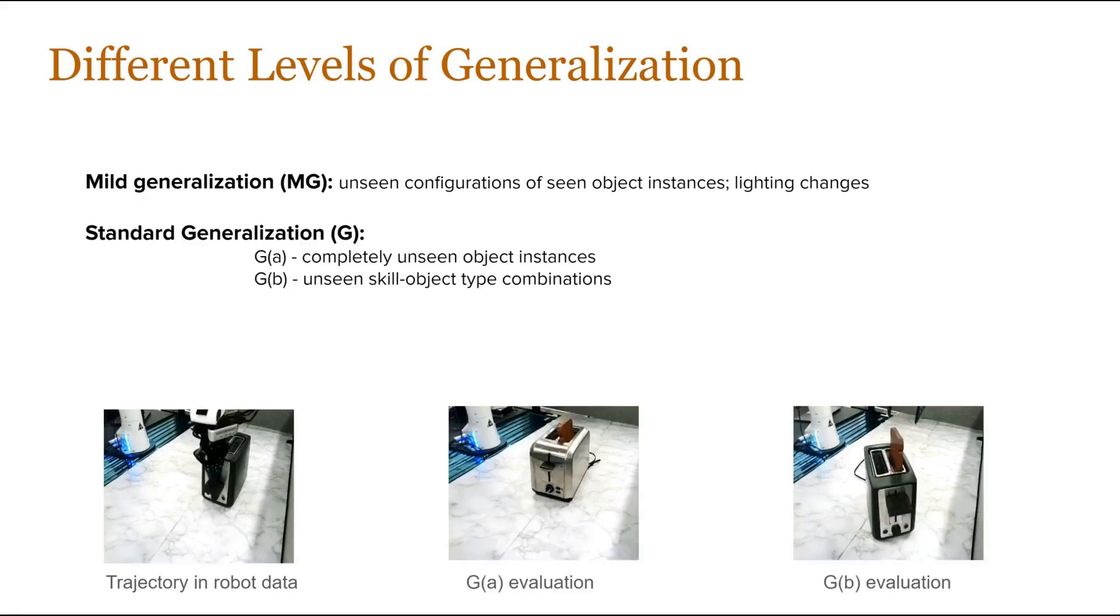For standard generalization, we have either a completely unseen object instance or unseen skill-object pairs. For example, we have seen a toaster being plunged in the training data, but we haven't seen other toasters being plunged, which we are generalizing to. We may have seen the toaster being plunged in the training data, but we haven't seen the skill picking in the context of a toaster, and this is what we are generalizing to.